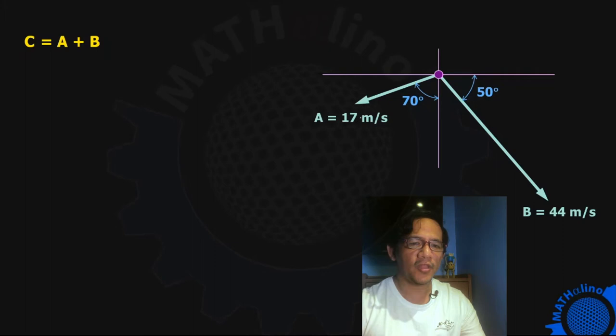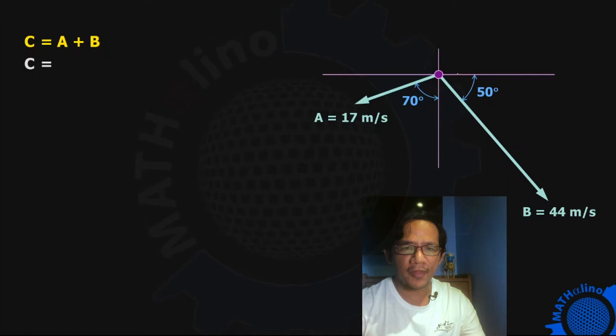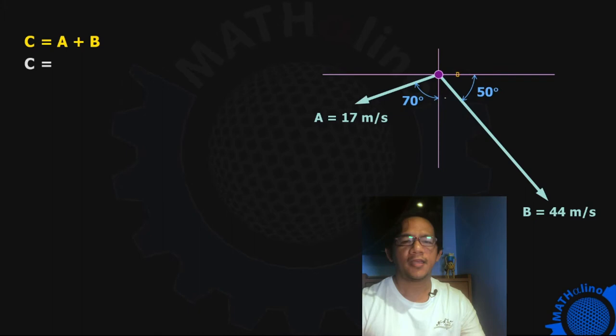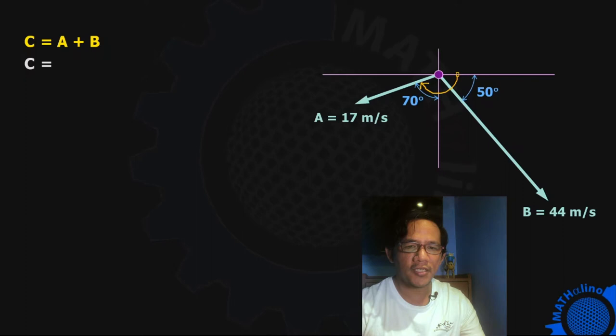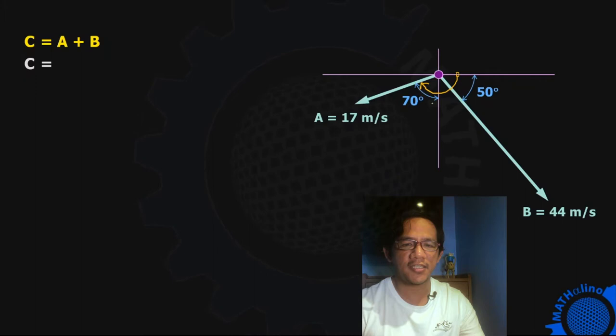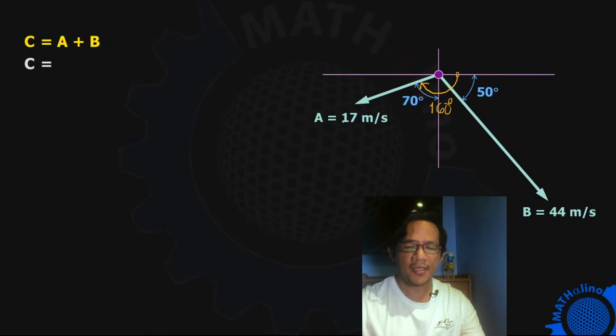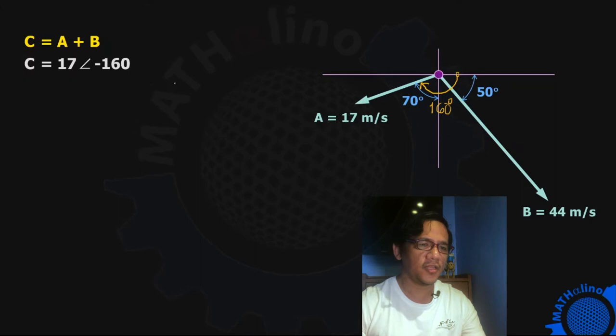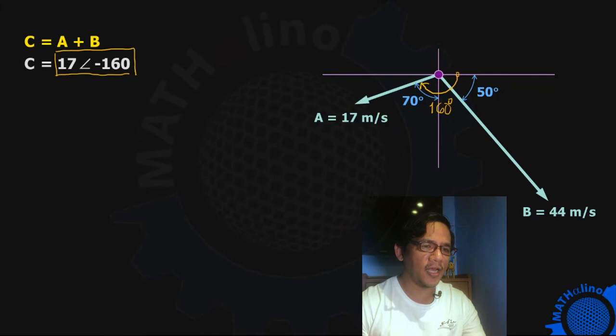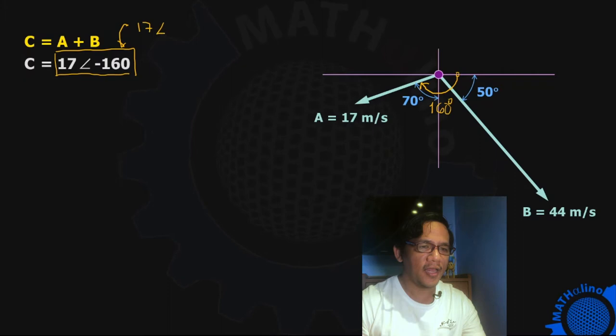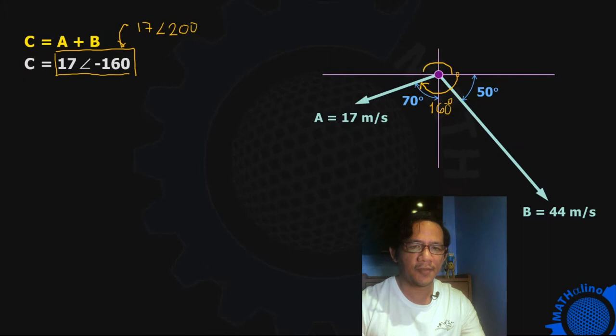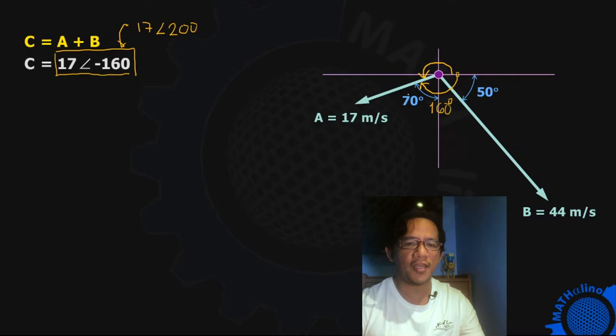Let us start with vector A. We start from the positive side of the x-axis in the xy-plane. But take note, we're in the complex plane. We're going to rotate counterclockwise, so for counterclockwise rotation, this is a negative angle — negative 160 degrees. We have 90 plus 70 is 160 degrees. So the definition of vector A is 17 angle negative 160. Take note that we can also write vector A in this form: 17 angle positive 200, which is from the positive side of the x-axis counterclockwise. That is 180 plus 20, or 270 minus 70, which equals 200.